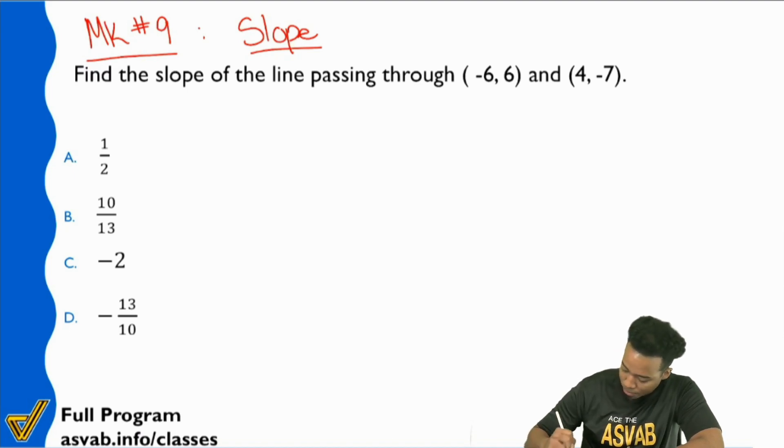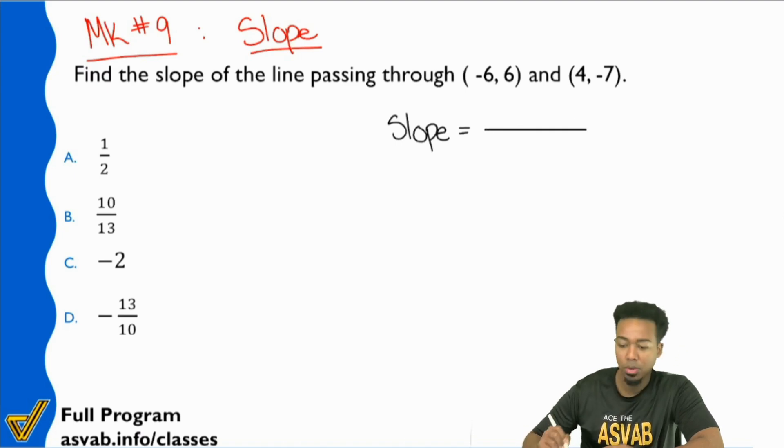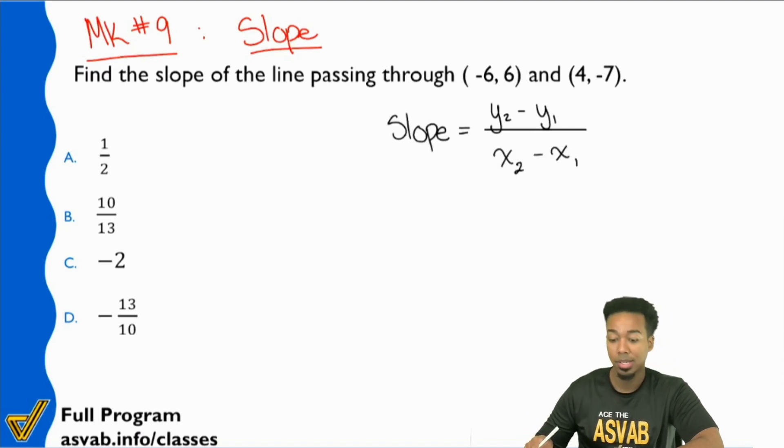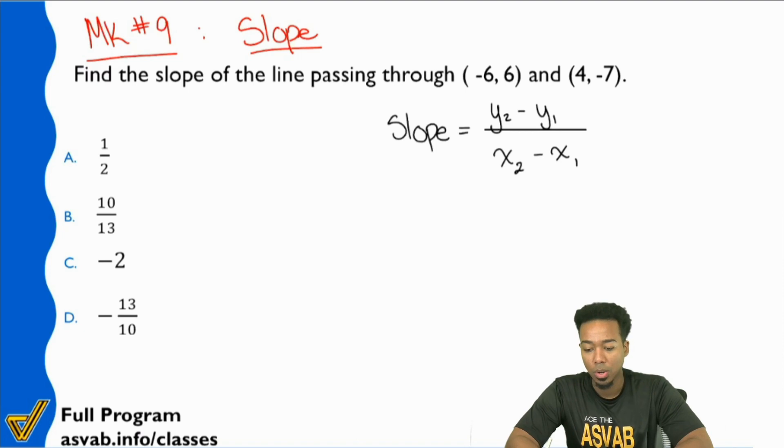Let me write this down for you. Slope is going to be equal. You've heard it as rise over run, maybe like that, but you can go ahead and say y2 minus y1 over x2 minus x1. So that's it right there. That's your formula.